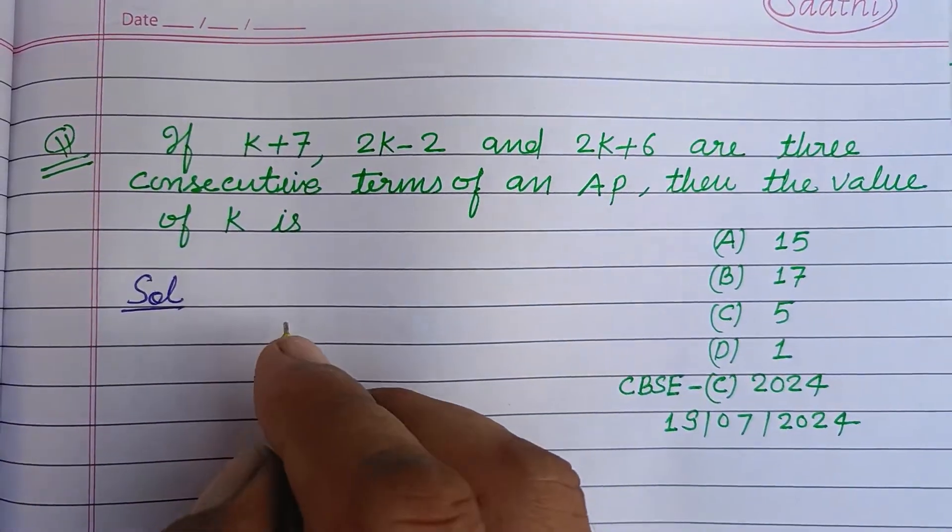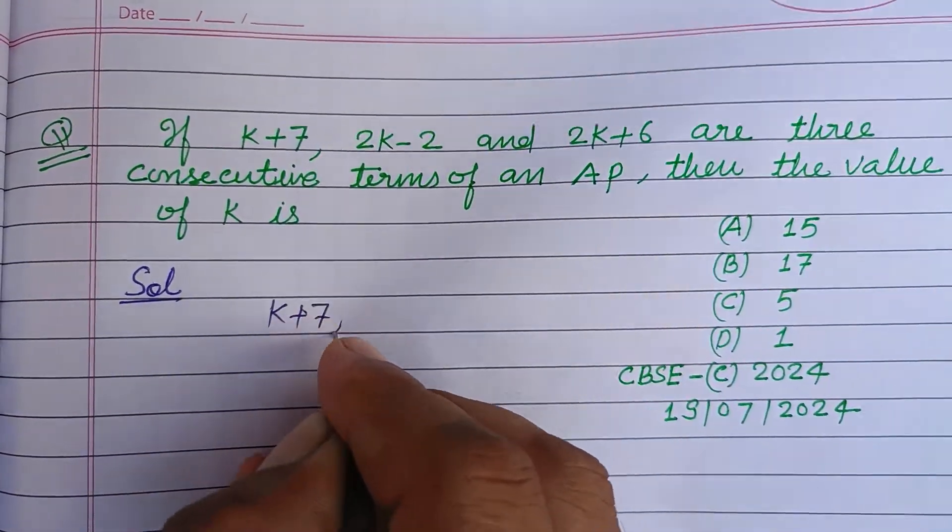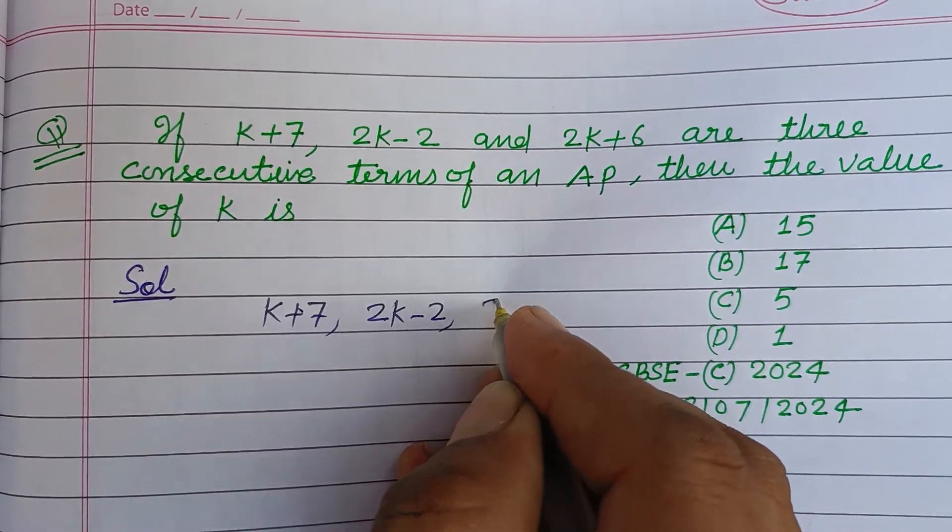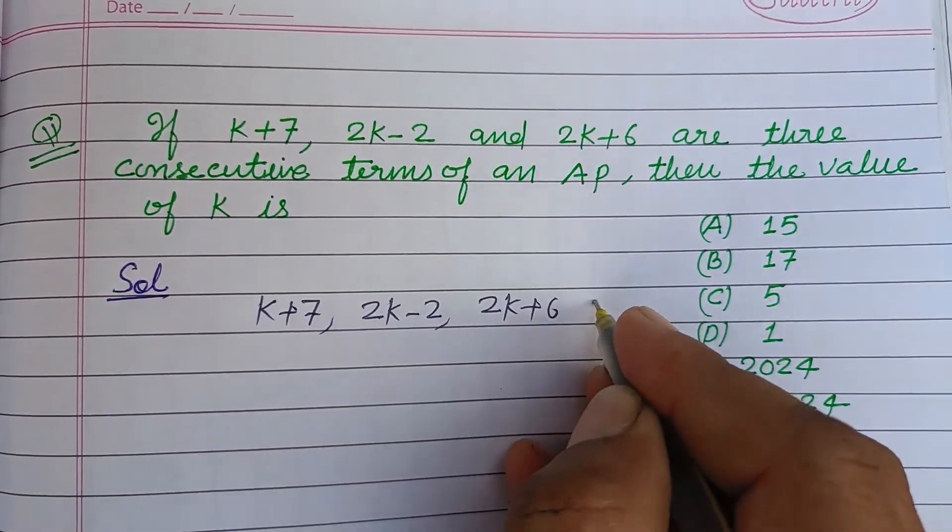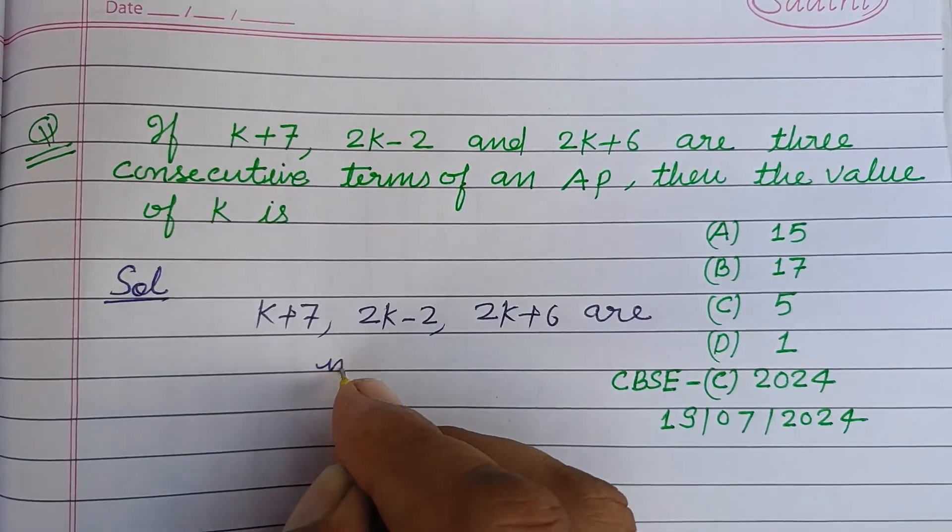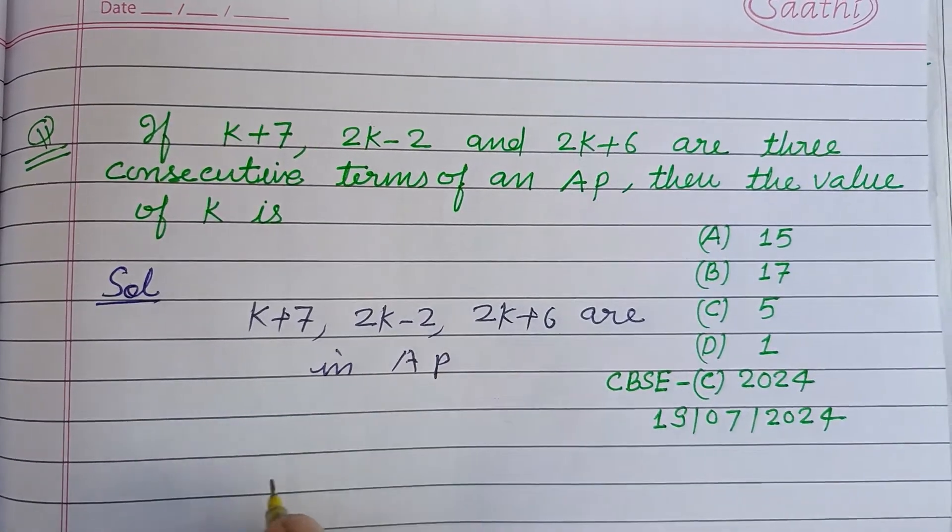So students, here k+7, 2k-2, and 2k+6 are in AP, arithmetic progression.